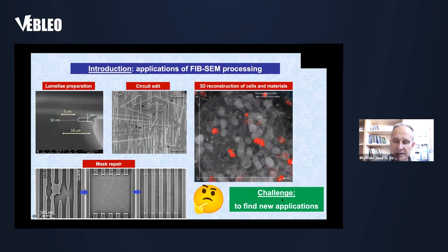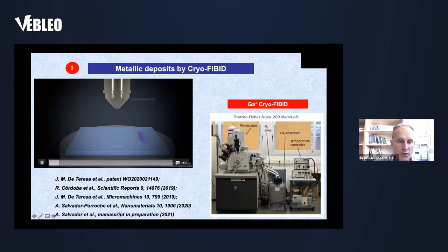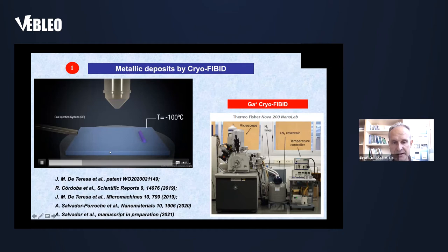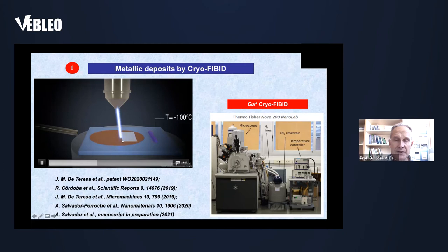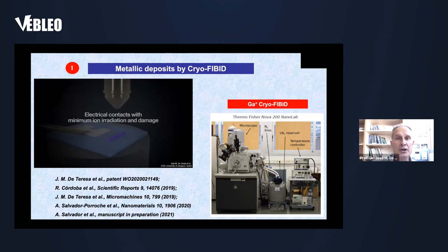My challenge is to find new applications for FIB-SEM. The first is the growth of metallic deposits using focused ion beam induced deposition in cryogenic conditions. I have a substrate cooled by cold nitrogen gas to minus 100 degrees Celsius. I insert the gas injection system, condense a precursor layer, then irradiate it with the focused ion beam in the desired shape. After heating back to room temperature, I have a deposit with the same shape as the irradiated pattern. The process requires very low irradiation, creating very low ion damage.